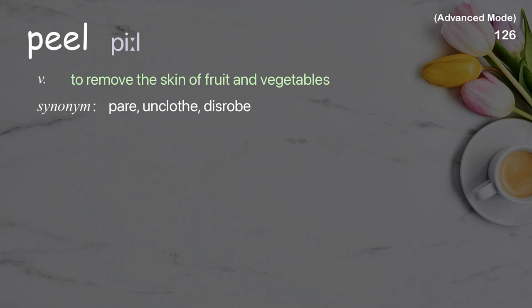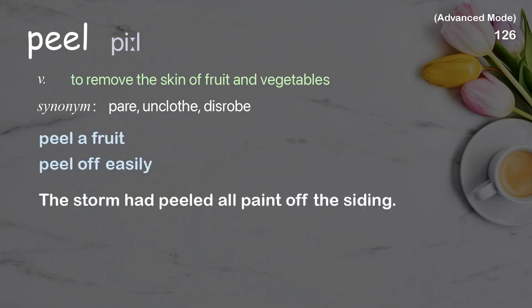Peel: to remove the skin of fruit and vegetables. Examples: peel a fruit, peel off easily. The storm had peeled all paint off the siding.